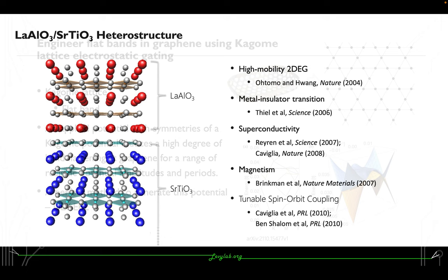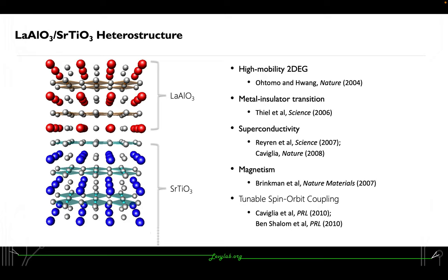The system we're working on is the lanthanum aluminate strontium titanate heterostructure, which has rich phenomena discovered. With three unit cells or more LAO growing on the STO substrate, there will be high-mobility 2D electron gas formed at the interface. It has metal insulator transition, superconductivity, magnetism.